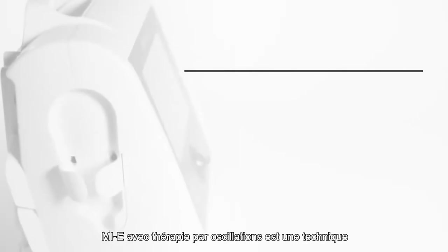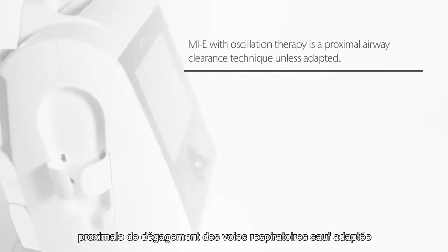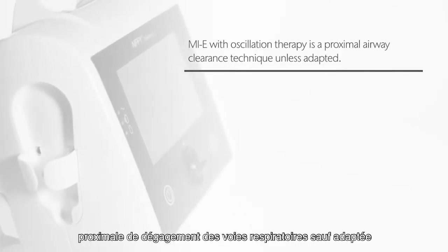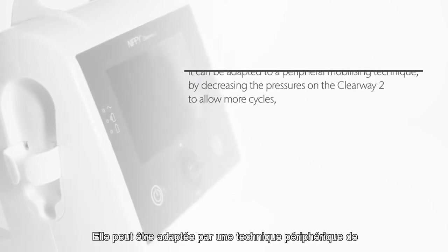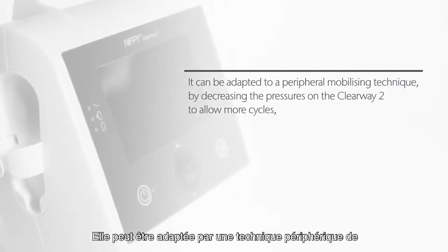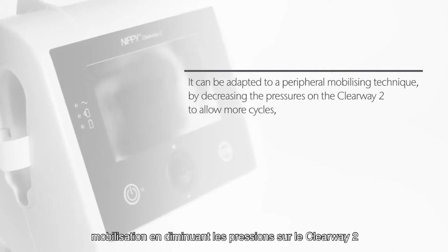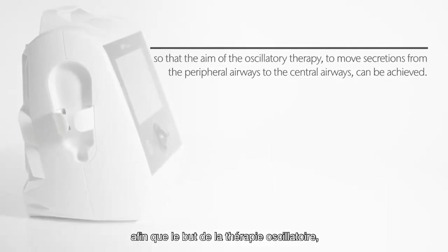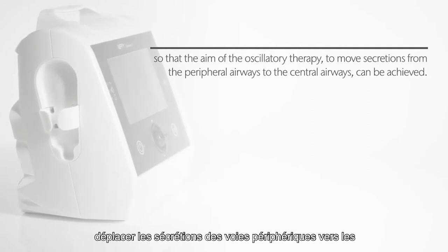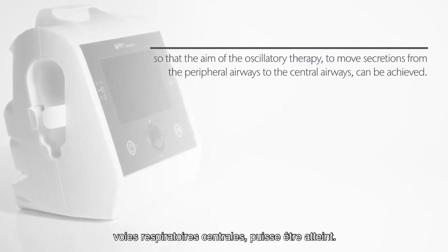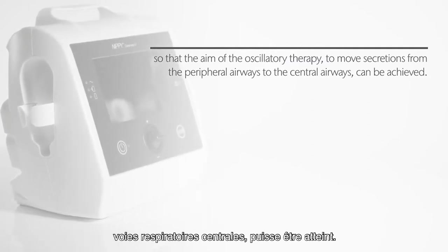MIE with oscillation therapy is a proximal airway clearance technique. It can be adapted to a peripheral mobilizing technique by decreasing the pressures on the Clearway 2 to allow more cycles, so that the aim of the oscillatory therapy — to move secretions from the peripheral airways to the central airways — can be achieved.